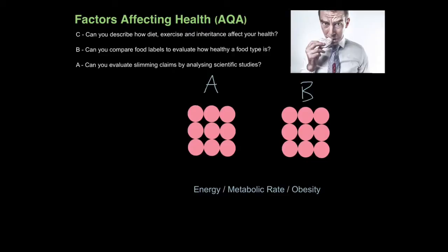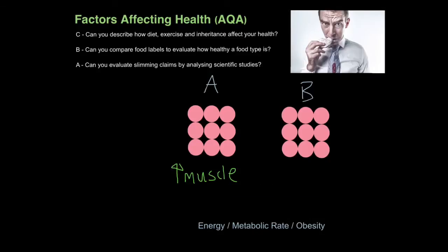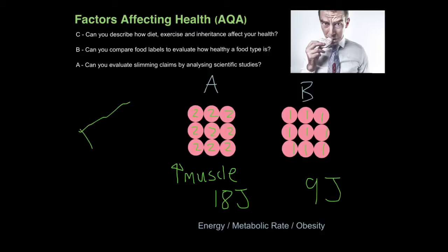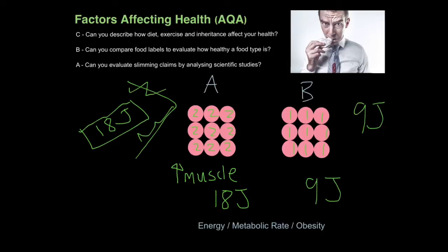Now let's repeat this analogy, but this time both organisms have the same mass, with another difference: organism A has a higher muscle content, whereas organism B is largely fat. Muscle has a higher resting metabolic rate than fat — a higher energy demand. So let's say every cell in organism A requires two joules, giving it a total energy demand of 18 joules, whereas organism B, without that muscle, requires only one joule per cell — nine joules total. If they both consume a chocolate bar with 18 joules, organism A utilizes all of it, whereas organism B has nine joules spare, leading to more fat development.